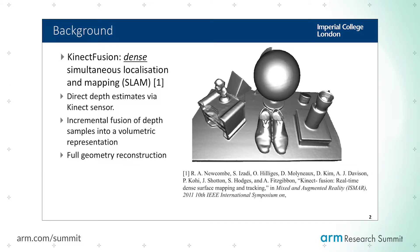So first, a couple of definitions. What is the problem called simultaneous localization and mapping? It's the problem where, given a moving sensor which can be a camera, you want to jointly estimate the camera position and an idea of the world that the camera is actually observing. We are focusing on dense methods, which essentially means that the geometry you recover of the world is completely dense.